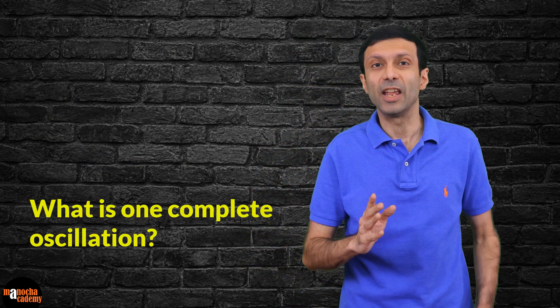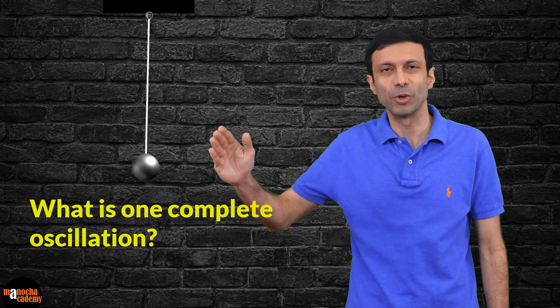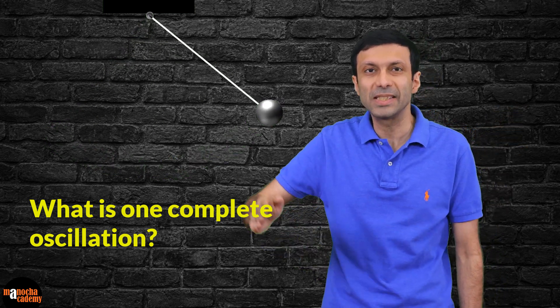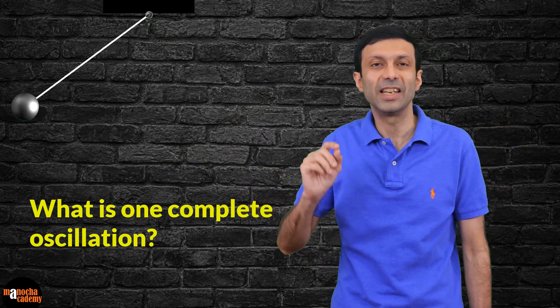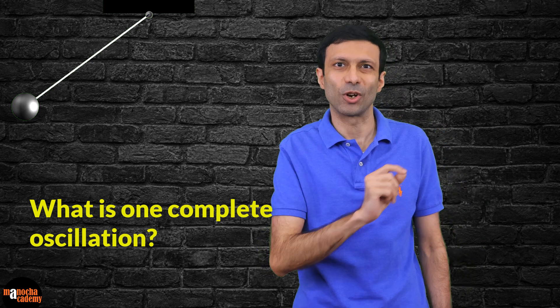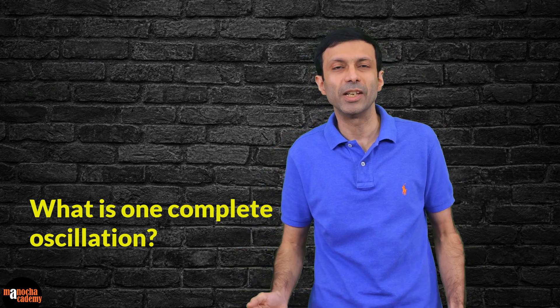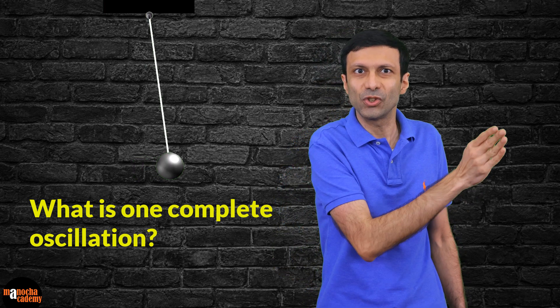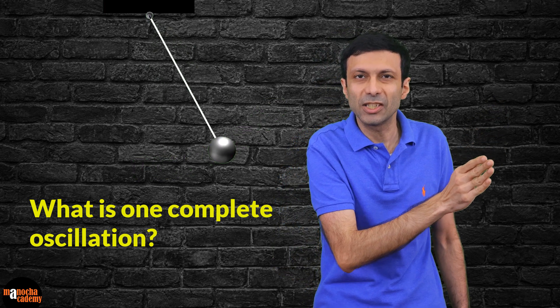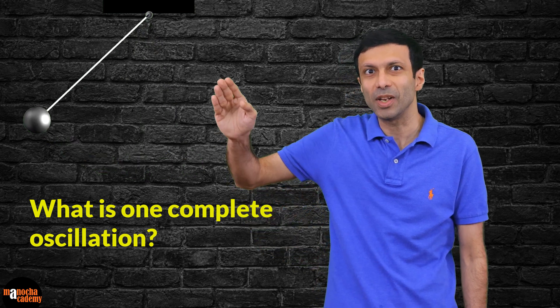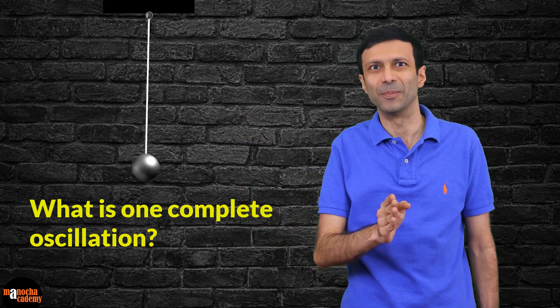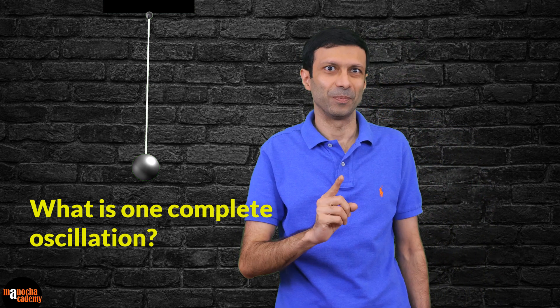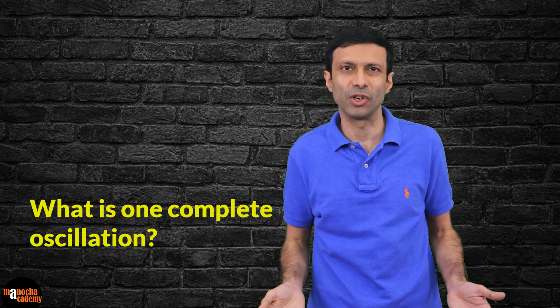Now, what is one complete oscillation? If you start the pendulum from one extreme position, when it swings and comes back to the same extreme position, it is called one complete oscillation. Or if you start the pendulum from the center position, then the pendulum goes to one extreme position and then swings back to the other extreme, and now it must come back to the center again. That is again one complete oscillation.